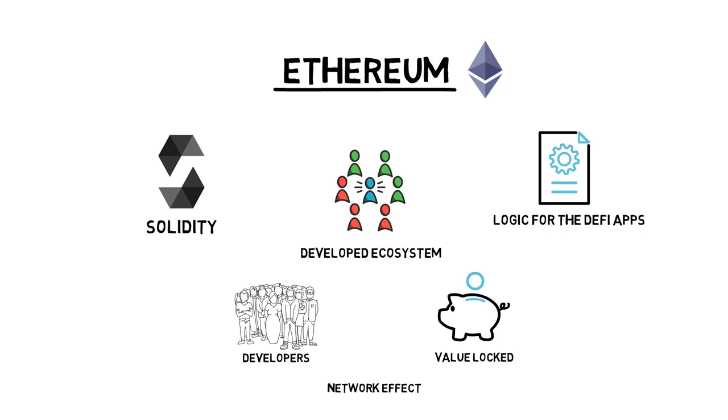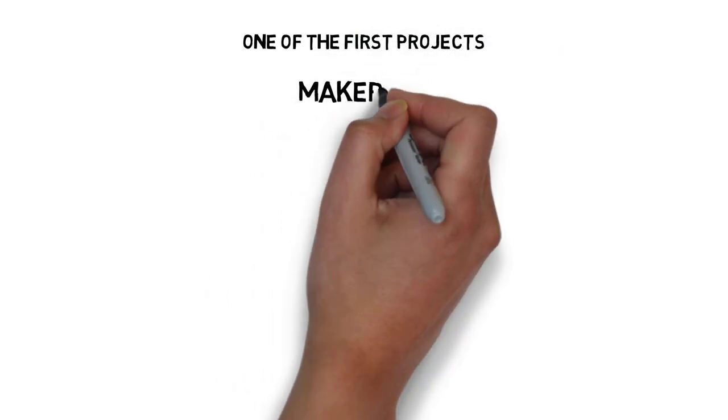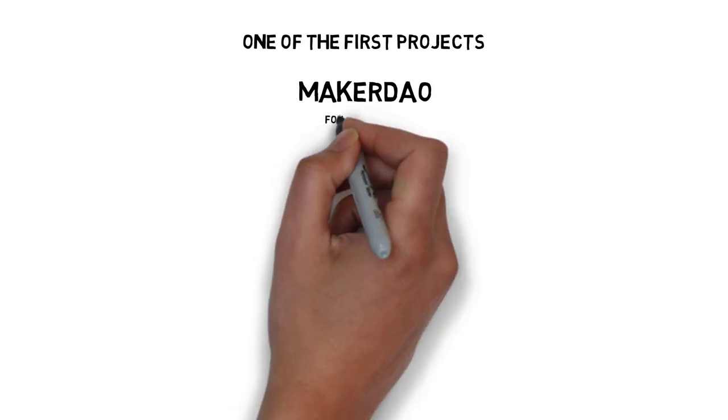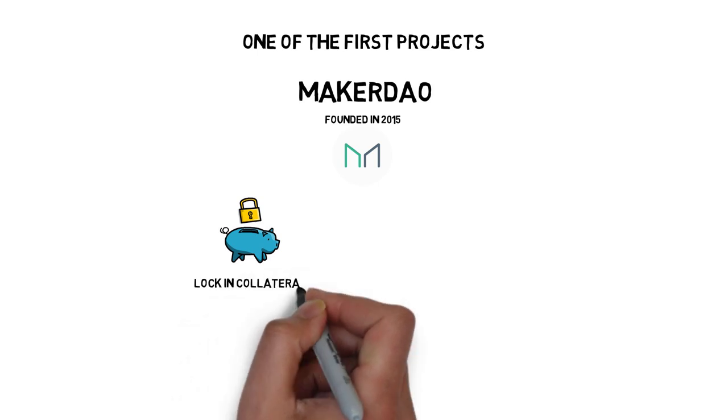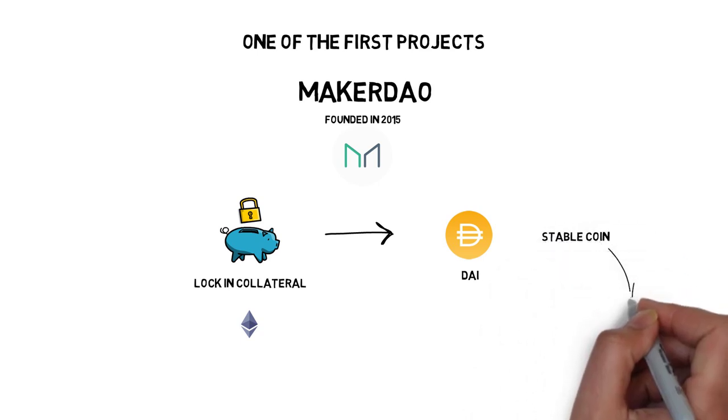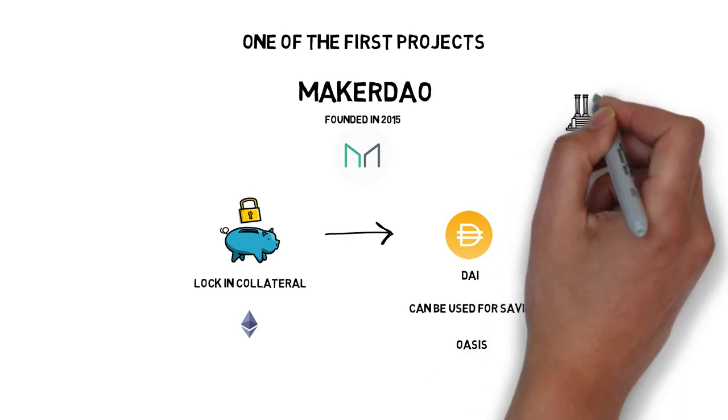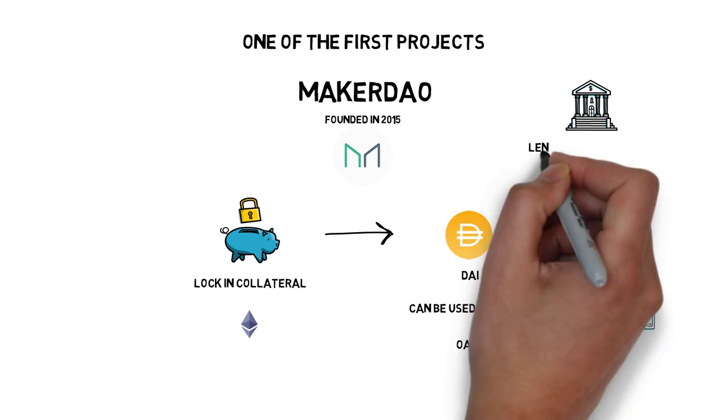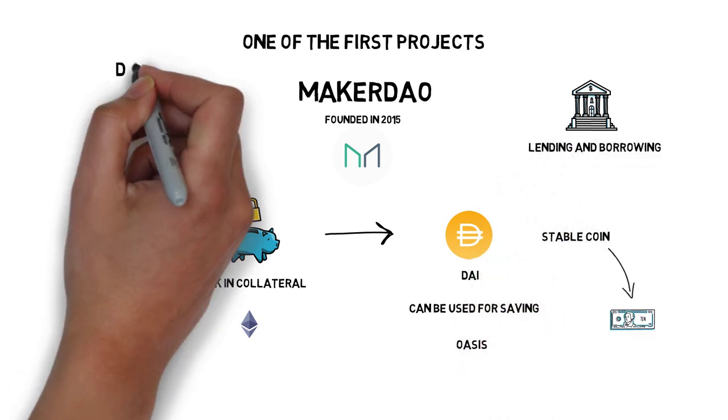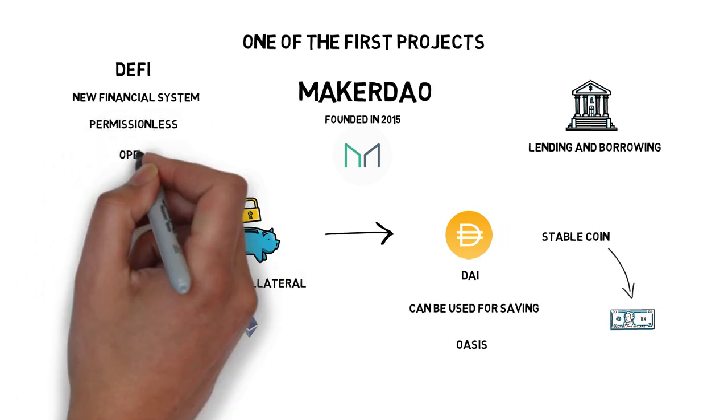Now let's see how it all started. One of the first projects that started the decentralized finance movement was MakerDAO. MakerDAO, founded in 2015, allows users to lock in collateral such as ETH and generate DAI, a stablecoin that by using certain incentives follows the price of US dollar. DAI can also be used for saving on Maker's Oasis platform. This recreates one of the pillars of the financial system: lending and borrowing. In fact, DeFi is trying to create a whole new financial ecosystem in a permissionless and open way. Lending and borrowing is only one part of this ecosystem.